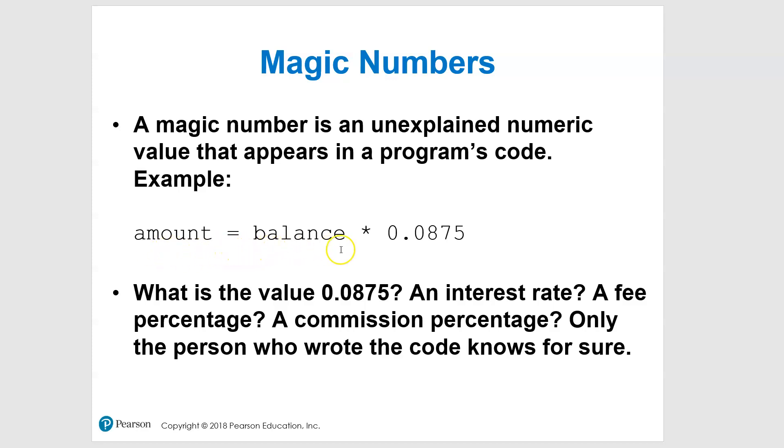So, for example, if you see this statement: amount equals balance times 0.0875, what is this? This is the piece we're talking about. I'm going to make that yellow because I like to highlight things. What exactly is this number? What is the value? Is it an interest rate, sales tax rate, or fee percentage?